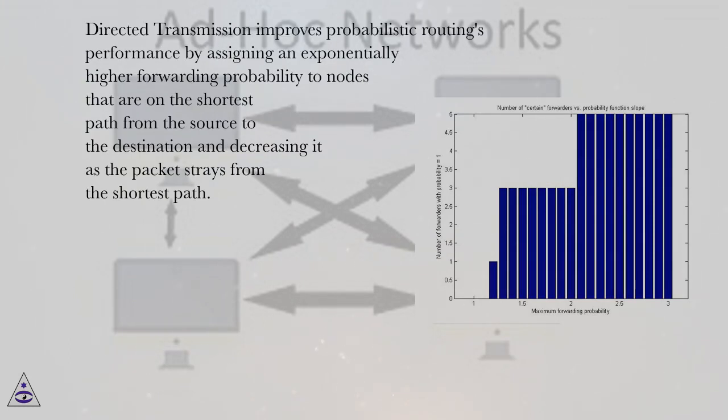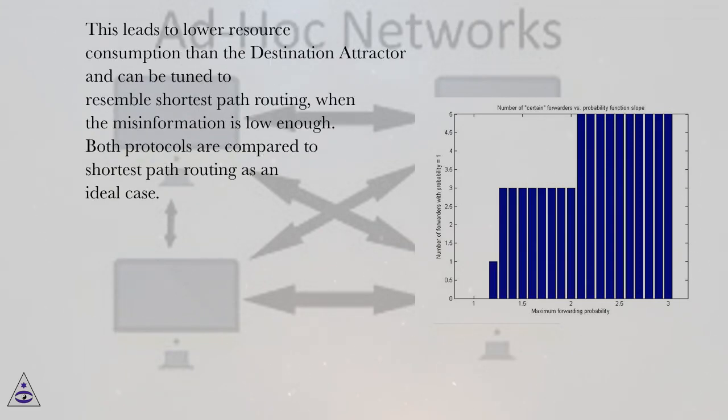Directed transmission improves probabilistic routing's performance by assigning an exponentially higher forwarding probability to nodes that are on the shortest path from the source to the destination and decreasing it as the packet strays from the shortest path. This leads to lower resource consumption than the destination attractor and can be tuned to resemble shortest path routing, when the misinformation is low enough. Both protocols are compared to shortest path routing as an ideal case.